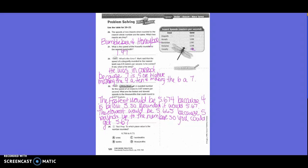To which place value is the number rounded? They went from 6 and 706 thousandths to 6 and 71 hundredths. So they circled this and looked at the 6. What place value is it rounded to? Hundredths — and there are only two places after the decimal in our answer.